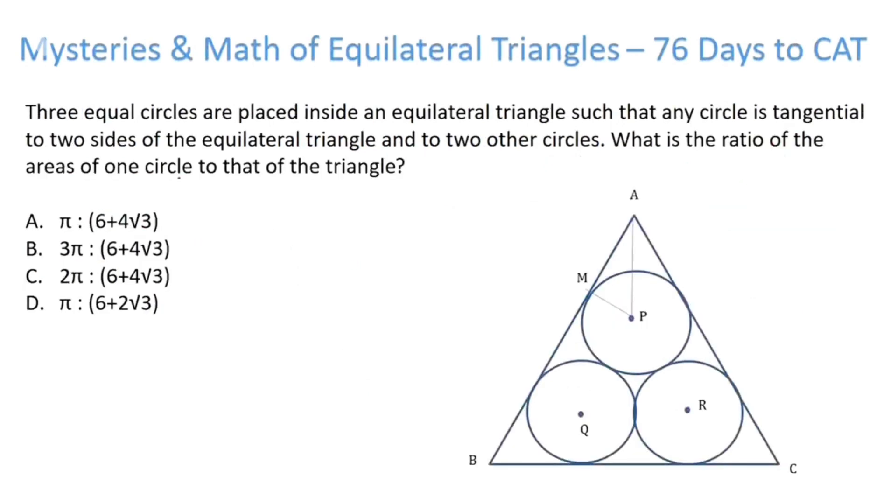The answer is answer option D here. I hope this is clear. Moving forward, three equal circles placed inside an equilateral triangle. And what's the ratio of areas of one circle to that of the triangle? So let's see, we have something like this here.